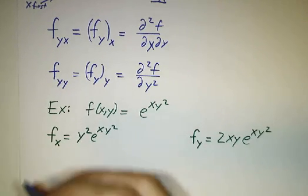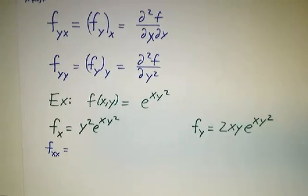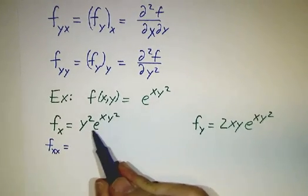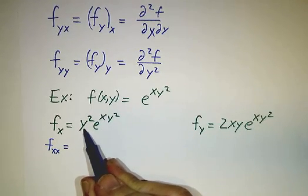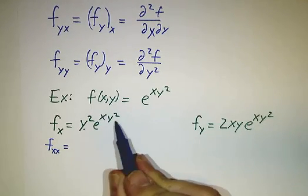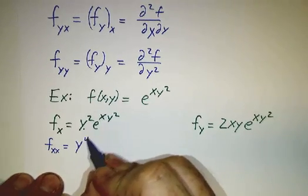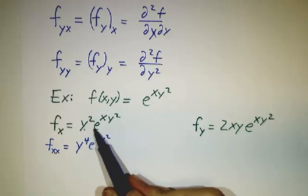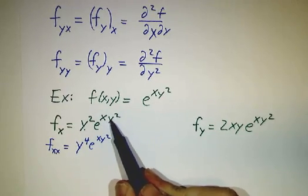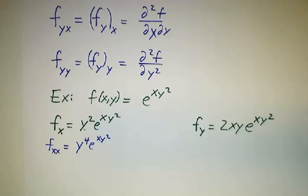Now we can figure out what f_xx is. We take a derivative of f_x with respect to x. y squared is treated as a constant, and we wind up with y to the fourth times e to the xy squared. When you take a derivative of a constant times e to the xy squared, you pull down a factor of that constant — y squared — times the original y squared, giving y to the fourth.